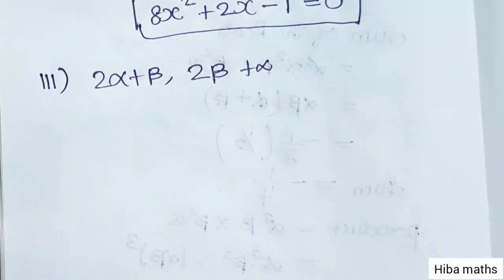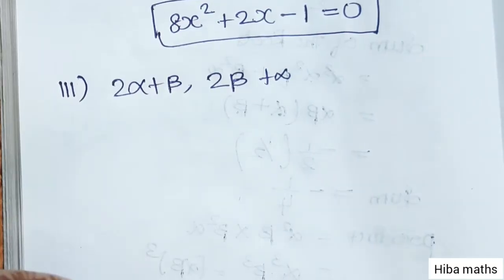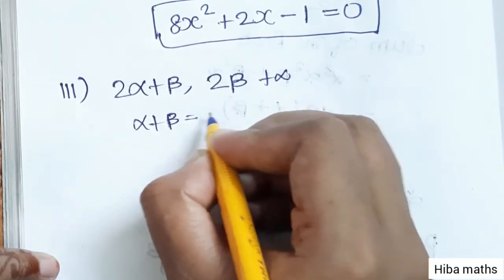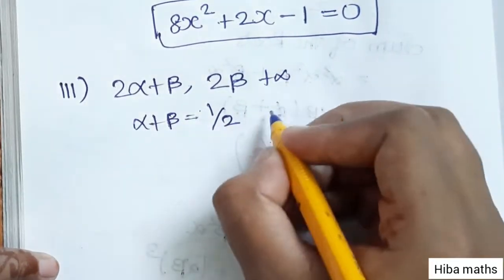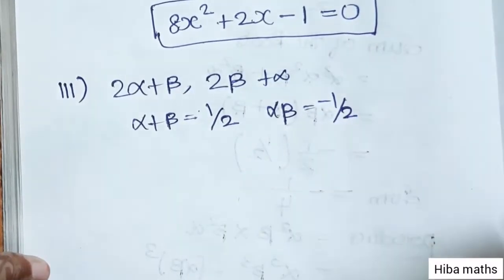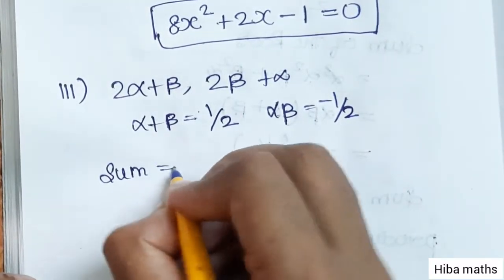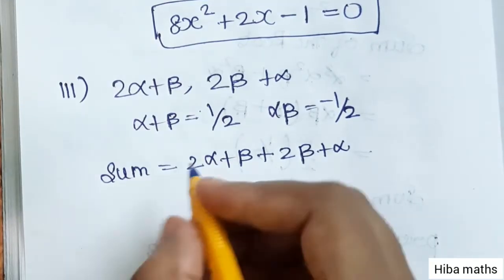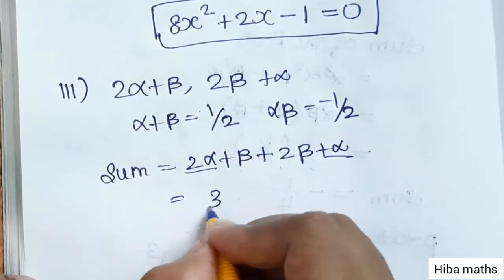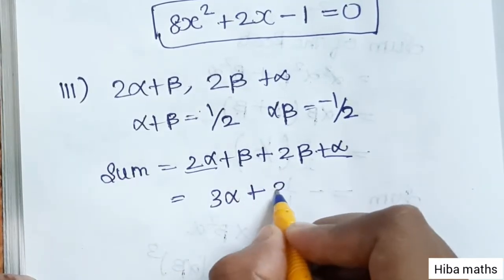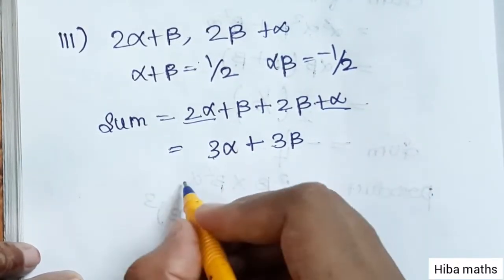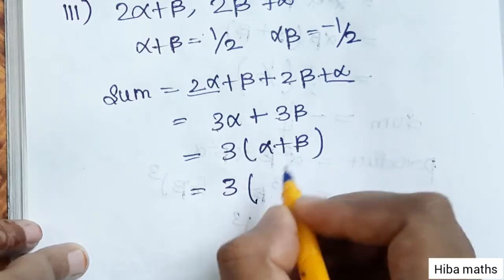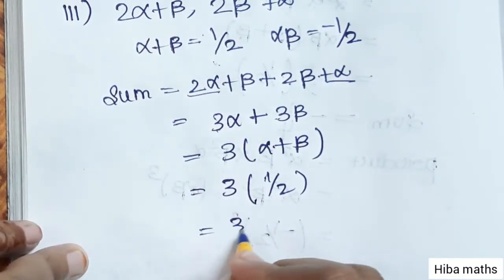For the third subdivision, roots are 2α + β and 2β + α. Given alpha + beta = 1/2 and alpha × beta = -1/2. Sum = (2α + β) + (2β + α) = 3α + 3β = 3(alpha + beta) = 3 × (1/2) = 3/2.